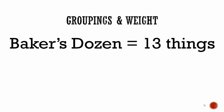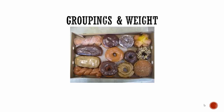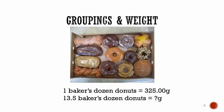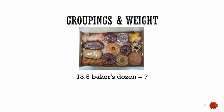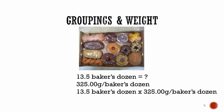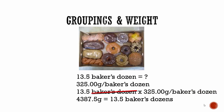What about going in the other direction? We'll define a baker's dozen as 13 things. You get handed a baker's dozen of donuts, and you're informed that one baker's dozen of donuts weighs 325 grams. If I were to hand you 13.5 baker's dozens of donuts, how many grams would you have? Since you're going from number to weight, you multiply: 13.5 baker's dozens times 325 grams per baker's dozen. The baker's dozen label cancels out, and you're left with 4,387.5 grams.